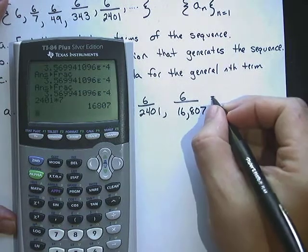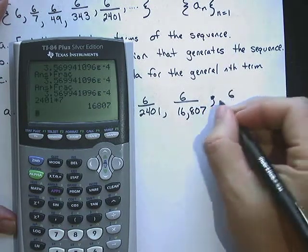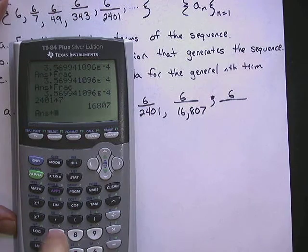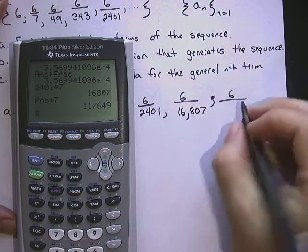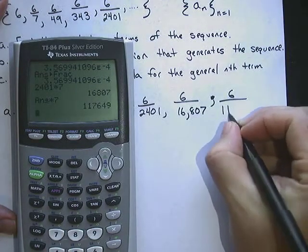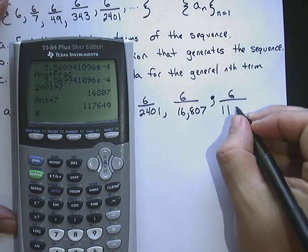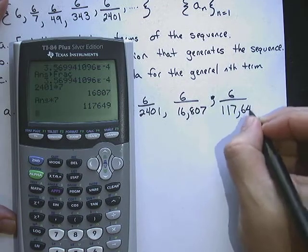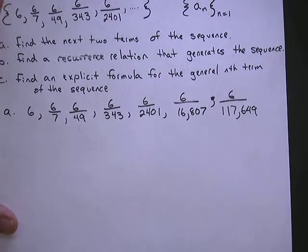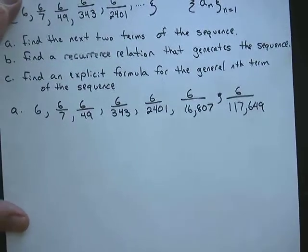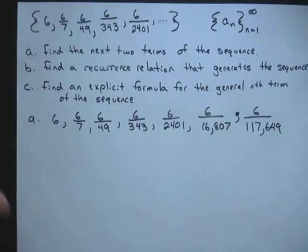And then the next term, it's a comma not equals. Next term would be multiply that denominator by a 7 again, and you get 117,649. So those are our next two terms. Got a little semicolon there. So that takes care of the next two terms.